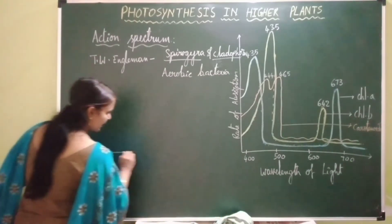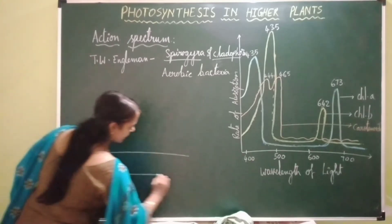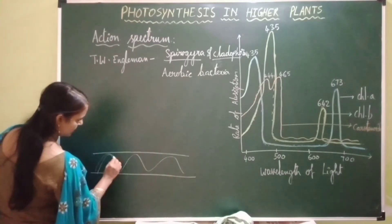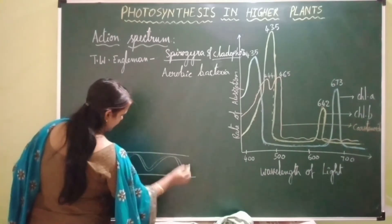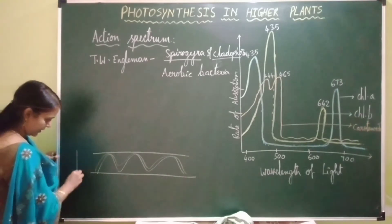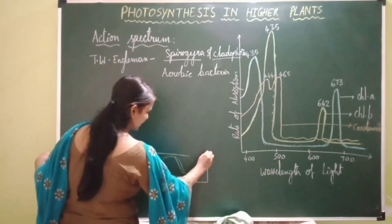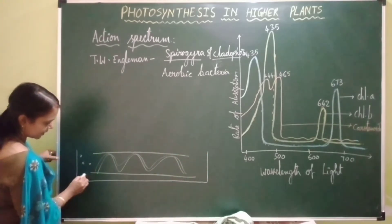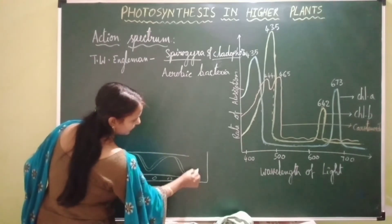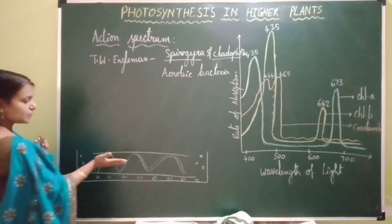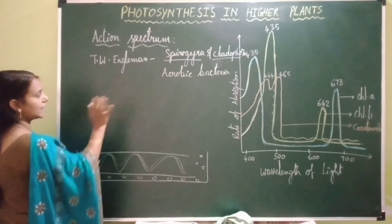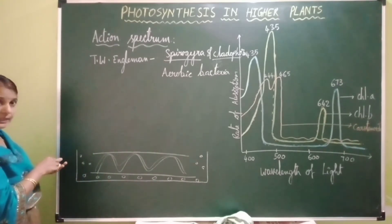This is the filamentous green alga spirogyra. Engelmann placed this spirogyra in an aerobic bacterial suspension. He then illuminated this spirogyra with different wavelengths of sunlight — let's see how he illuminated it.